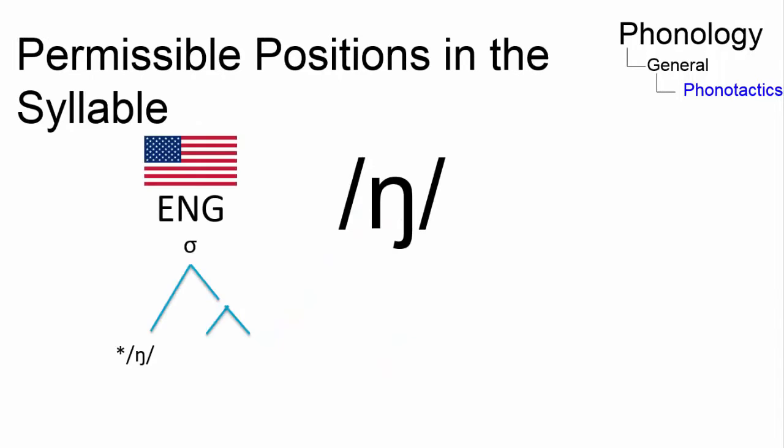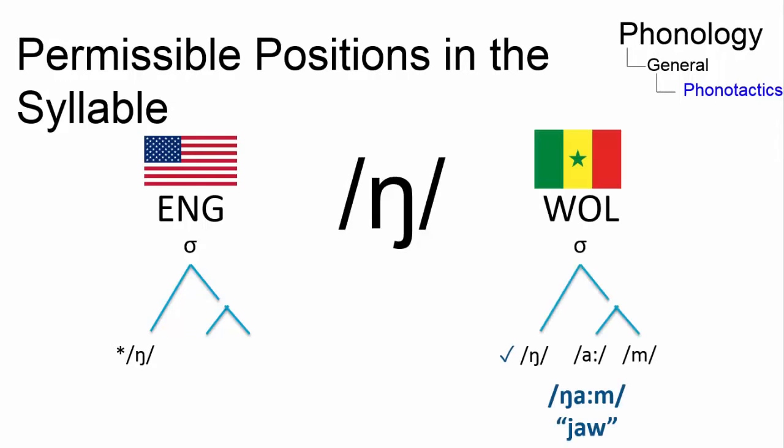Whereas in English no syllable begins with a velar nasal consonant even though it can occur at the end, other languages are not similarly constrained. Wolof, for instance, contains syllables such as Gnam.